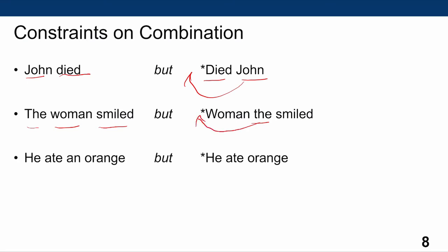Our third example is 'he ate an orange,' with a pronoun, a transitive verb 'ate,' a determiner 'an,' and the noun 'orange.' I cannot say 'he ate orange,' leaving out the determiner — that is ungrammatical in English. It turns out that in English, nouns that are not names or pronouns demand an article when used as subjects or objects in a clause. So we want to explain the knowledge that allows people to put sentences together in a manner that is both unbounded but at the same time constrained.